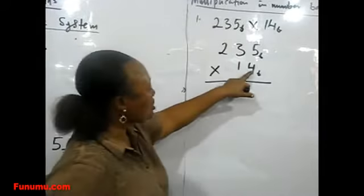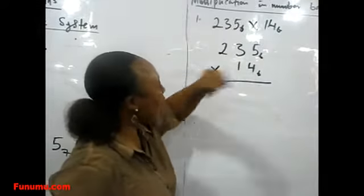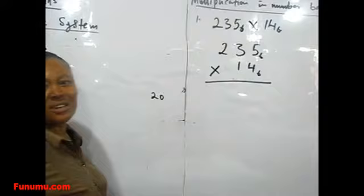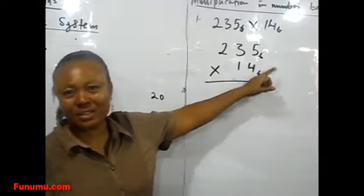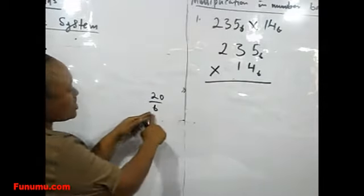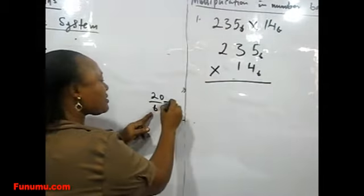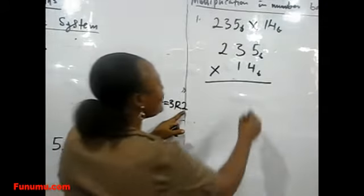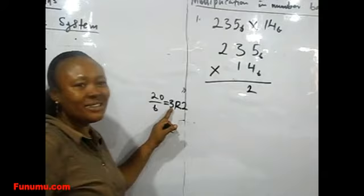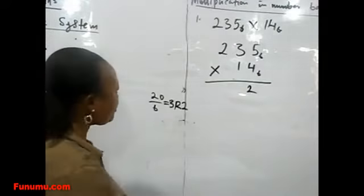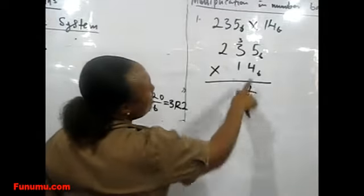Now we start with the last individual score. 4 times 5 is 20. And 20 is bigger than the base, so what do we do? We divide by the base. Now 20 divided by 6 is going to be 3, which is 18, remainder 2. So here we write down the remainder.